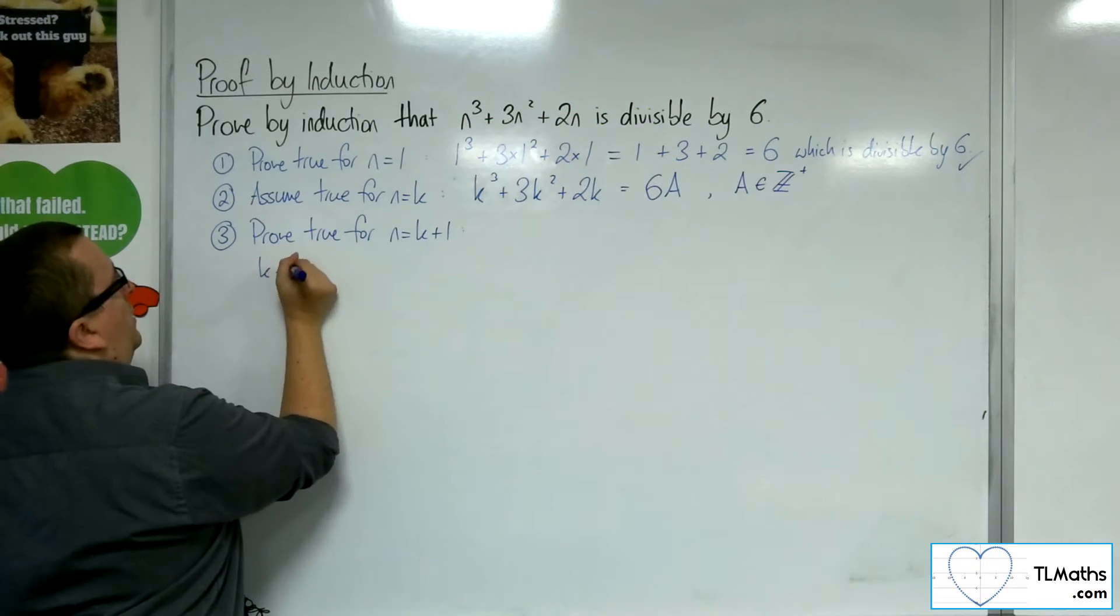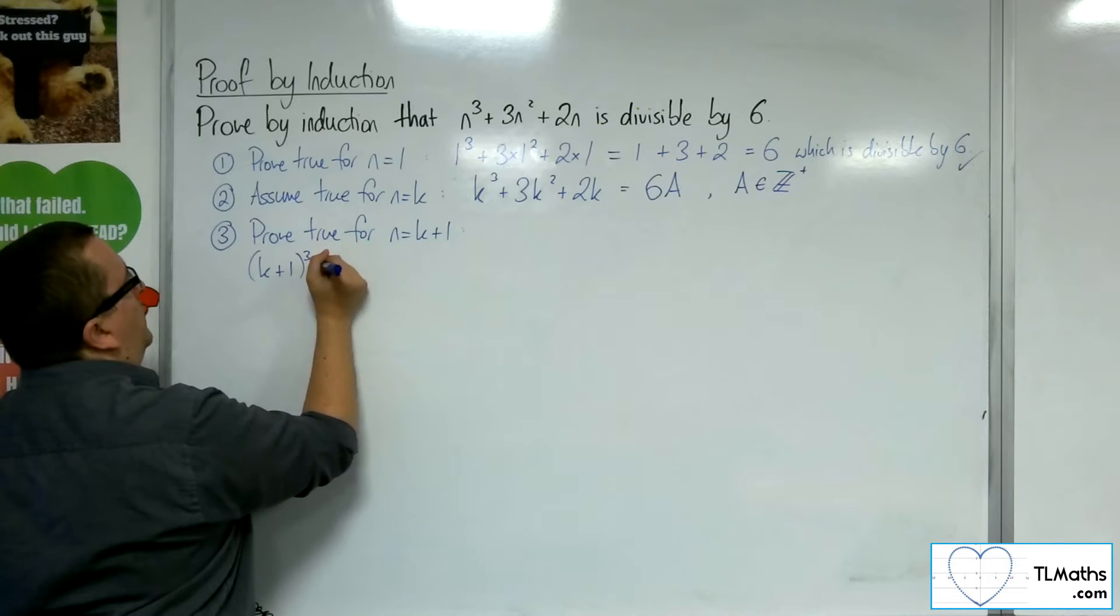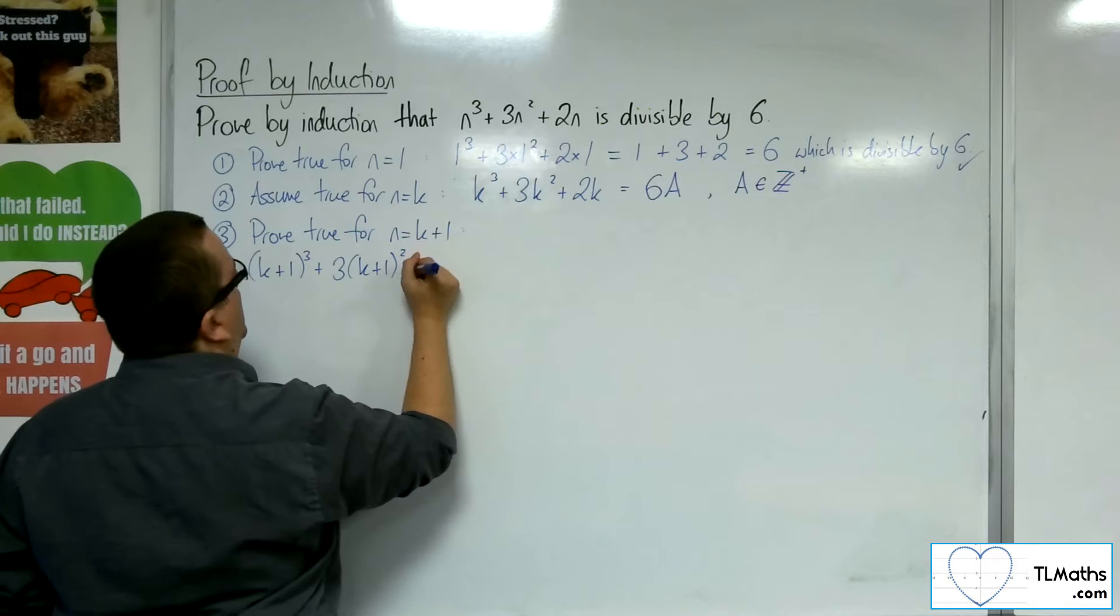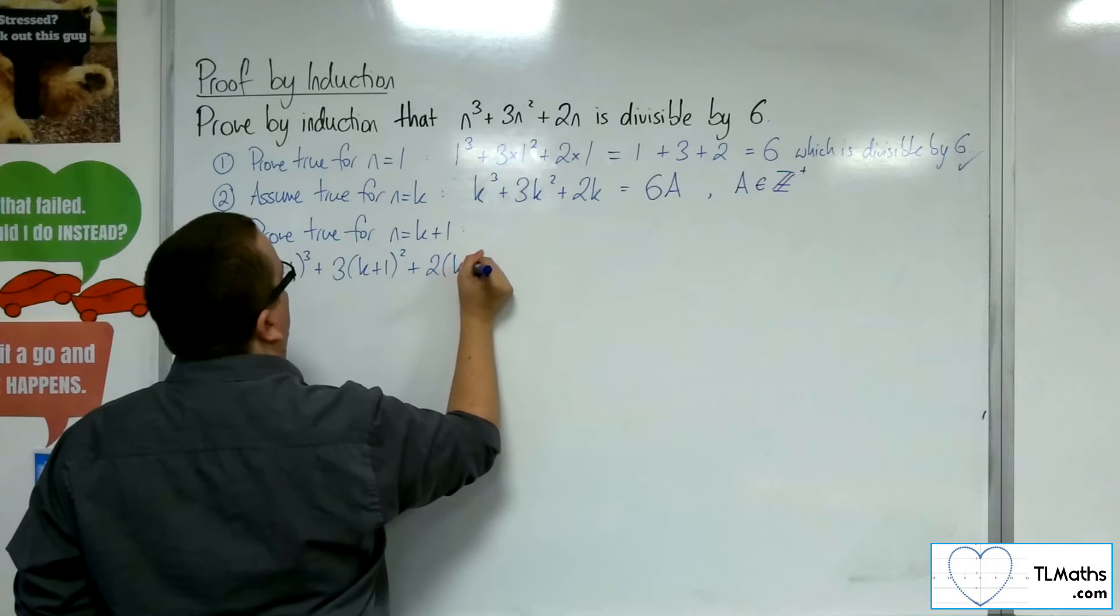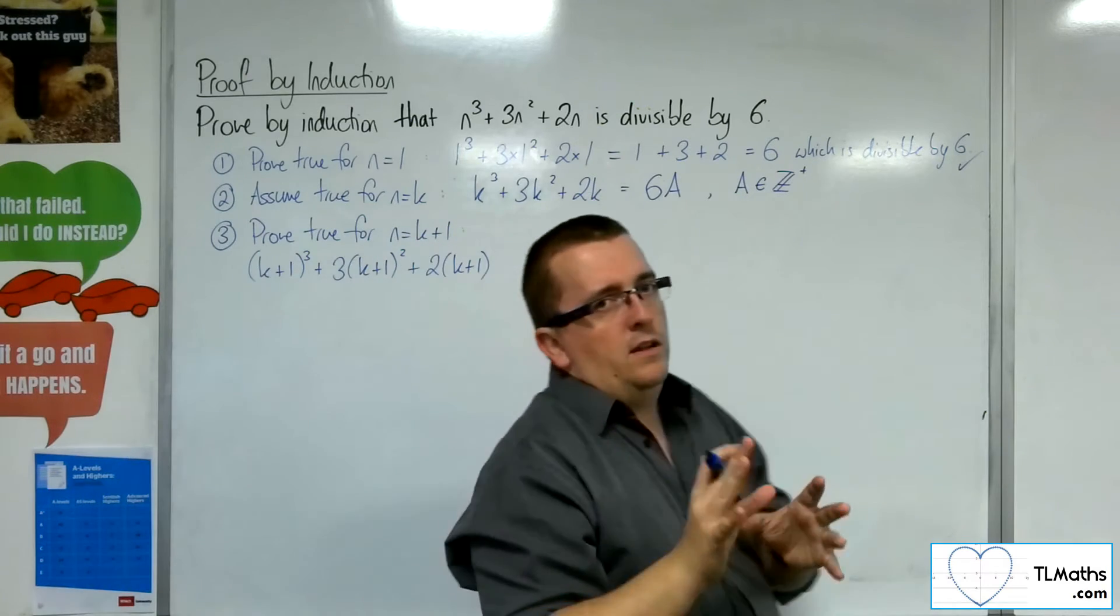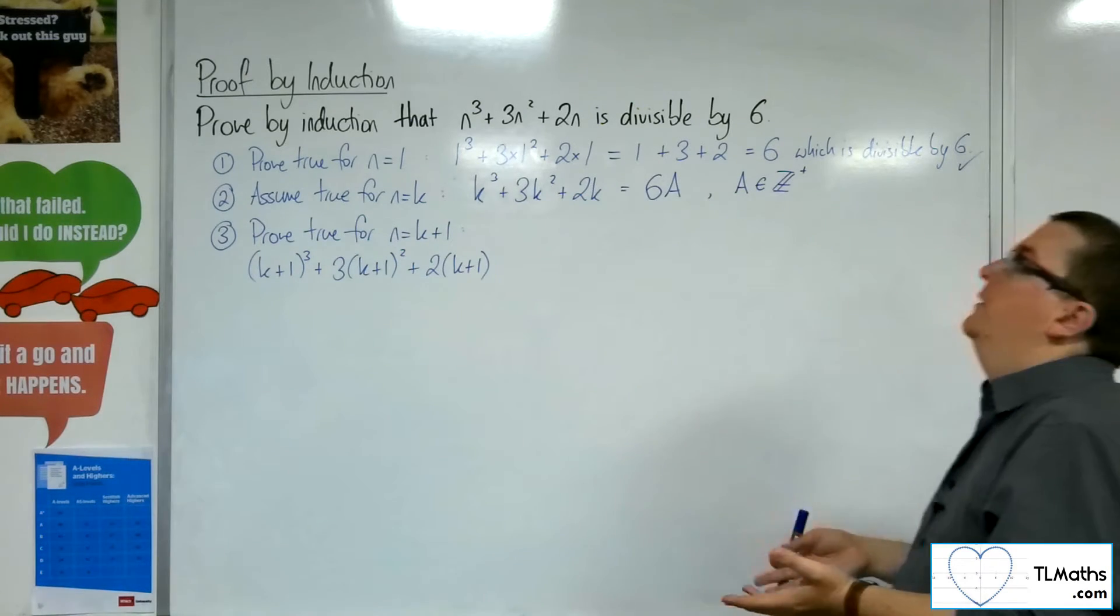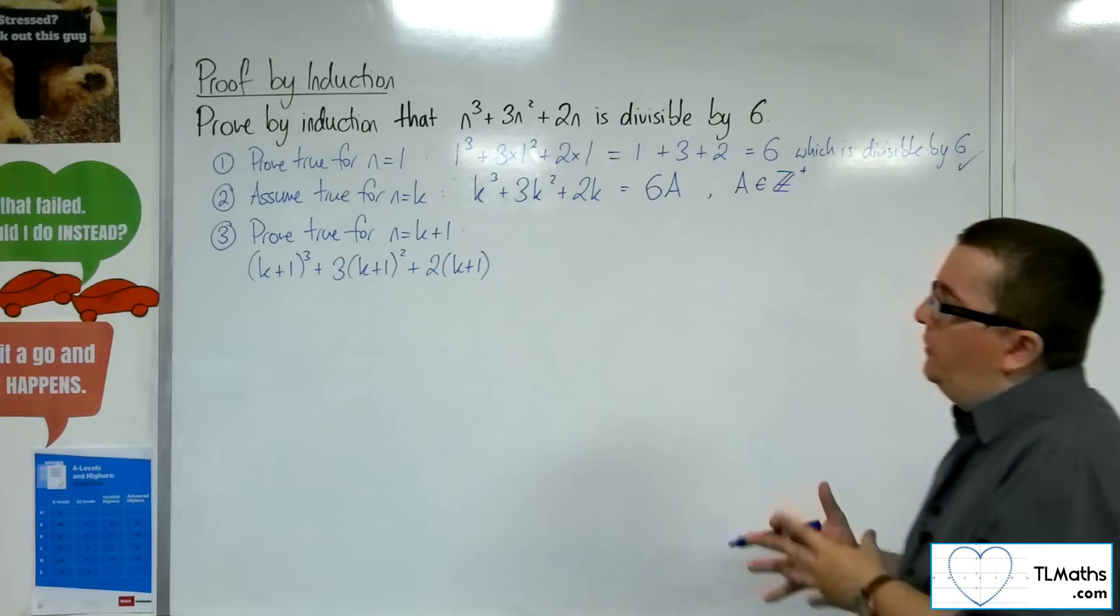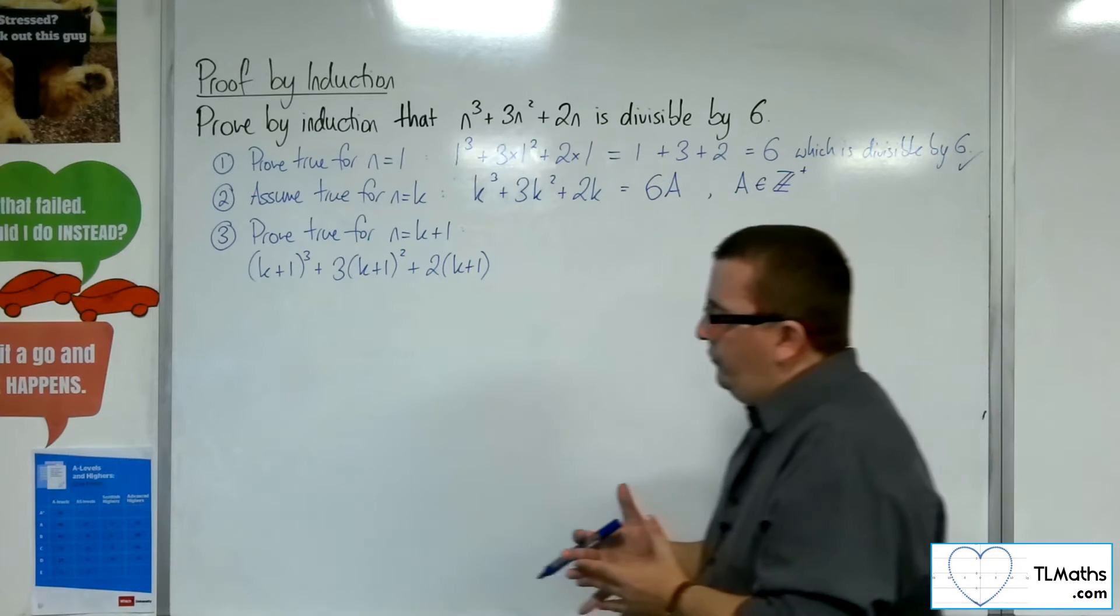So, I'm going to get k plus 1 cubed plus 3 lots of k plus 1 squared plus 2 lots of k plus 1. So, what I'm going to do is I want to, through algebraic manipulation, show that that is always divisible by 6. That's the plan here.